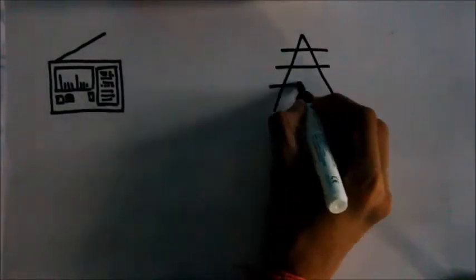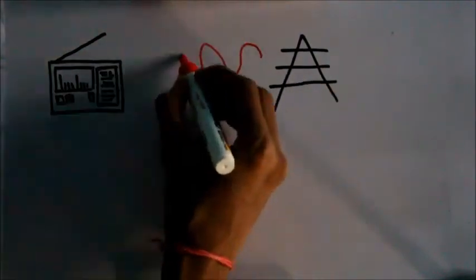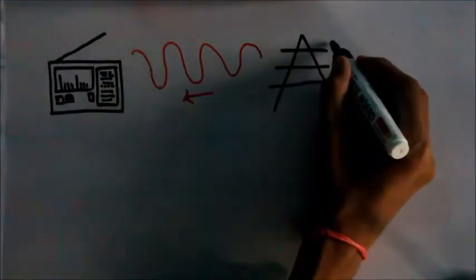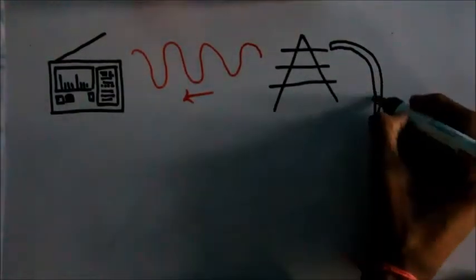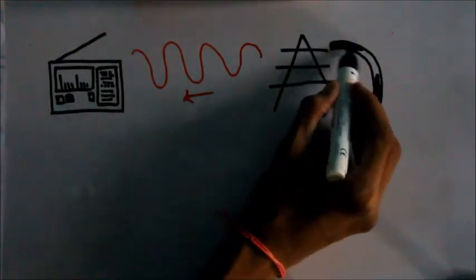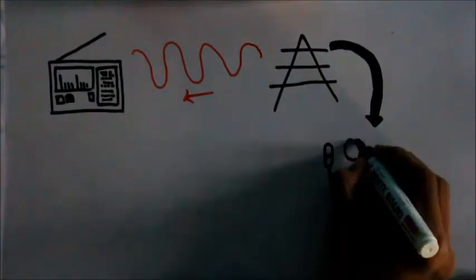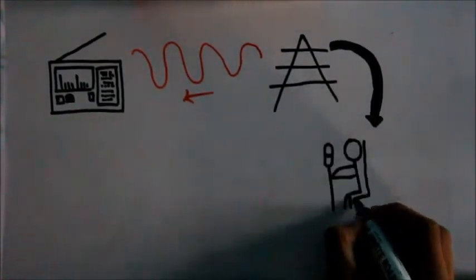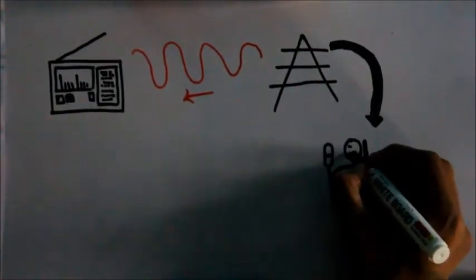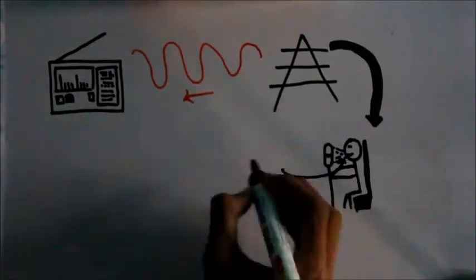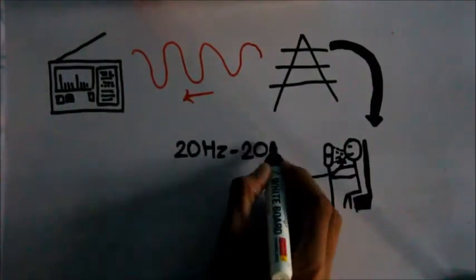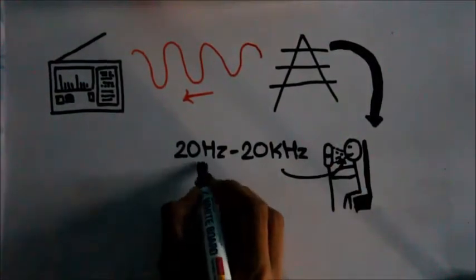The base station sends radio signals, but in these base stations as we know there are actually people speaking, and the frequency of these human voice signals range from 20 hertz to 20 kilohertz. These signals are called low frequency signals.